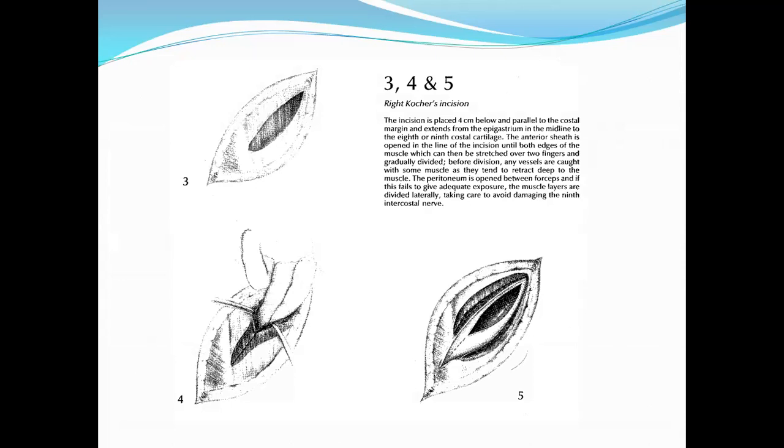The right Kocher incision: the incision is placed four centimeters below and parallel to the costal margin and extends from the epigastrium at the midline to the eighth or ninth costal cartilage. The anterior sheath of the rectus sheath is opened in the line of the incision until both edges of the muscle, which can then be stretched over two fingers and gradually divided. Before division, any vessels are caught with some muscle as they tend to retract deep to the muscle.